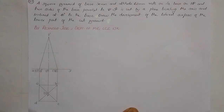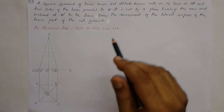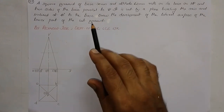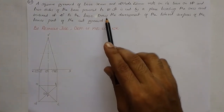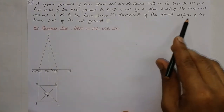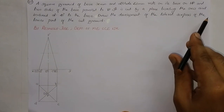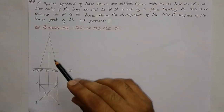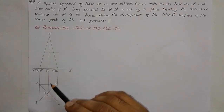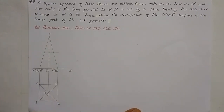This is a problem involving a sectioning process. It is sectioned by a plane inclined at 40 degrees to the base, which means 40 degrees to the horizontal plane. We are supposed to draw only the development of the lateral surface of the lower part of the cut pyramid. As it involves a sectioning process, we have to draw the front view and top view using type B lines.